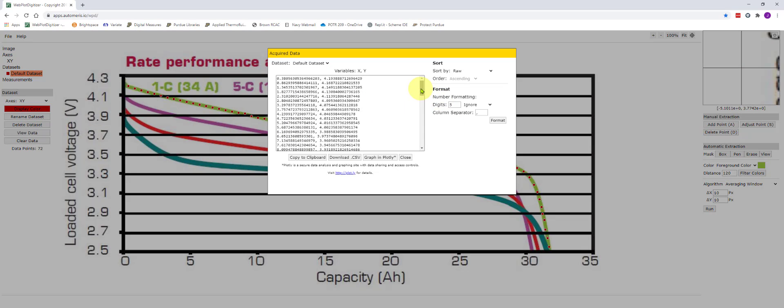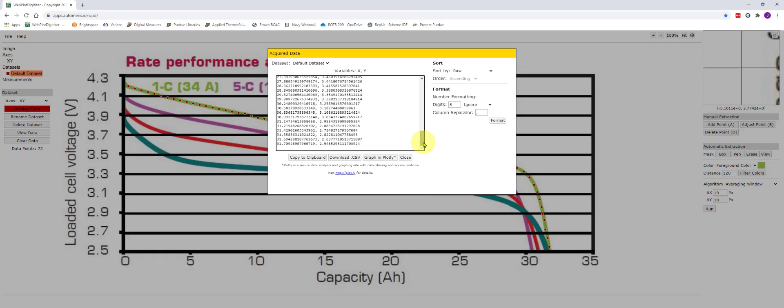I'm going to click view data. And now I've got a comma separated value list which I can export to Excel or use in any other program.